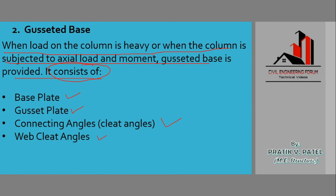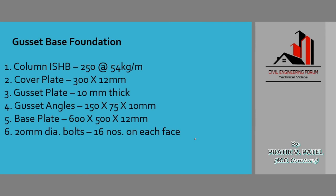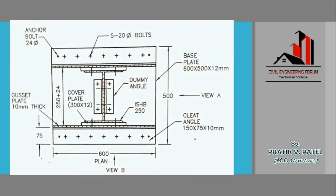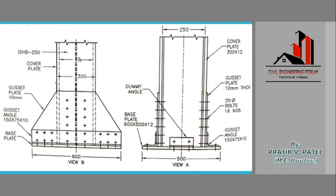Now let us see the components: base plate, gazette plate, connecting angles, and web cleat angle. These are all shown in the figure. This is the column on which loading is there, and this is the gazette plate.